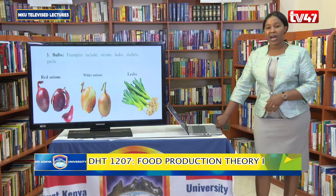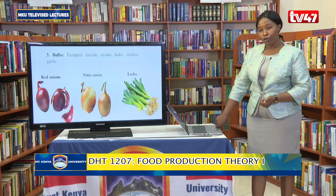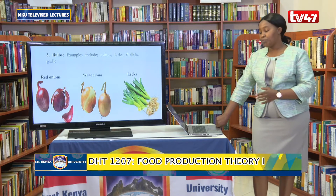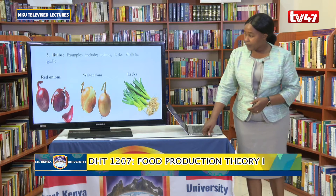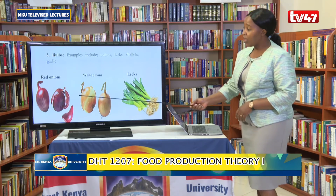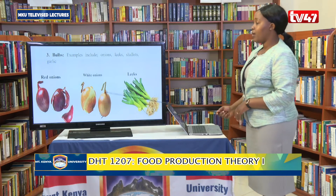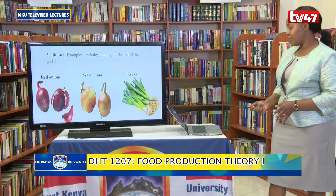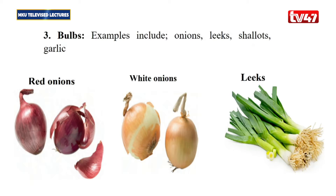The third category is bulbs. Examples include onions, leeks, shallots, and garlic. We have different types of onions — red onions, the most common, and white onions, most commonly used for salads. Leeks have a very strong flavor and are excellent for soups, stews, and stocks. Onions in general are used in almost every meal, especially when we fry foods — we always add some onions.